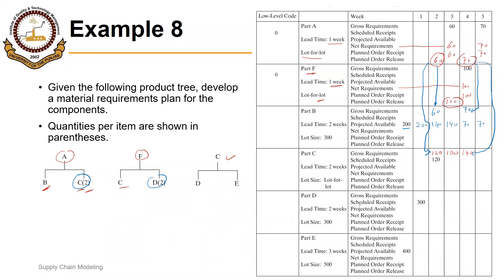For C, we have a scheduled receipt of 120 in week 2. We are not having any safety stock, so we will end up with zero projected available at the end of period 2. We need 100 in period 3, so net requirements will be 100. Lead time is 2 weeks, lot size policy is lot for lot, so planned order receipt will be 100 and ending inventory will be 0. Net requirements of 140 in week 4, planned order receipt of 140, and corresponding planned order release of 140 in week 2 because lead time is 2 weeks.